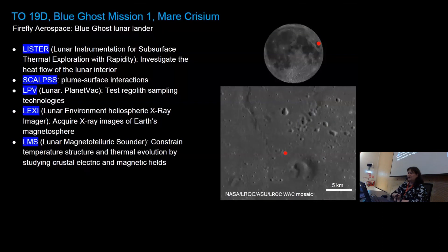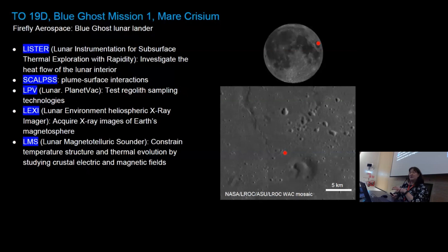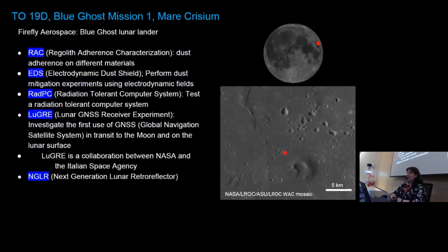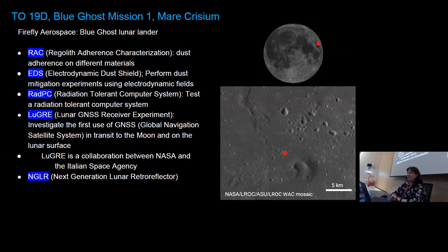Heading into 2024, task order 19D or Blue Ghost Mission 1 is headed to Mare Crisium. There are 10 payloads on this lander. They're investigating the heat flow of the lunar interior, looking at plume-surface interactions, testing regolith sampling technologies, acquiring X-ray images of Earth's magnetosphere, constraining the thermal evolution of the moon, studying crustal electric and magnetic fields, doing dust adherence and mitigation experiments using electrodynamic fields, testing a radiation-tolerant computer system, and investigating the first use of GNSS both in transit to the moon and on the lunar surface — a collaboration between NASA and the Italian Space Agency.